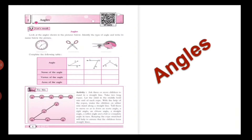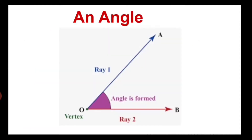Chapter number 2 is Angles. To study an angle, we should know the meaning of an angle. So let us see how we can define an angle. Here we can observe a figure of an angle. In this figure, we can see that two rays are meeting or intersecting each other at one point. The names of these two rays are ray 1 and ray 2, and ray 1 is named OA.